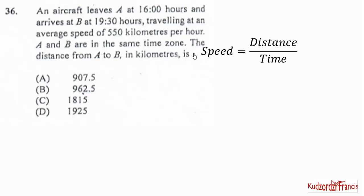We are given the speed to be 550 km per hour. So we need the time where we can calculate the distance. So to get the time we subtract the initial from the terminal. So 1930 hours minus 1600 will give you 330 hours, which is the same as 3.5 hours.